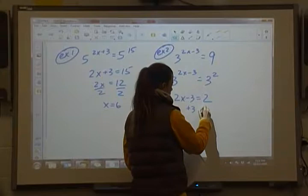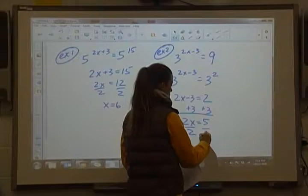So 2x minus 3 equals 2. Add 3 over, and we get 2x is equal to 5, divide by 2, x is 5 halves.